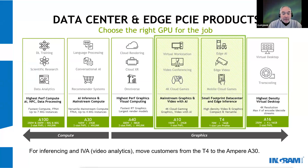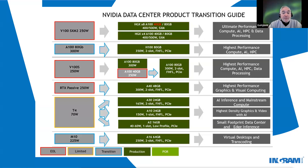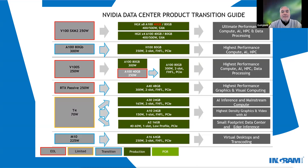Previous to the Ampere family was the Tesla series, represented here by the T4, which is an entry-level GPU still available for entry-level graphics applications such as VDI. For customers who utilized the older M, T, V, or RTX GPU cards from NVIDIA, this chart shows the new recommended GPUs to transition to among the Ampere A series and the new Grace Hopper H100 GPUs. For new deployments, the rightmost column gives the suggested applications for each of the Ampere or H100 GPUs.